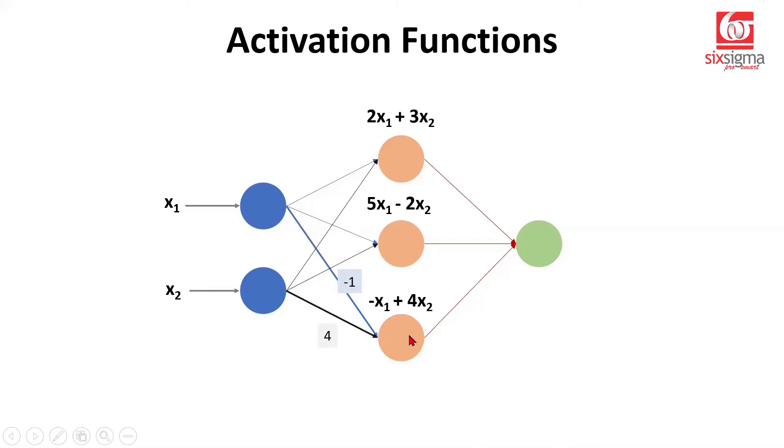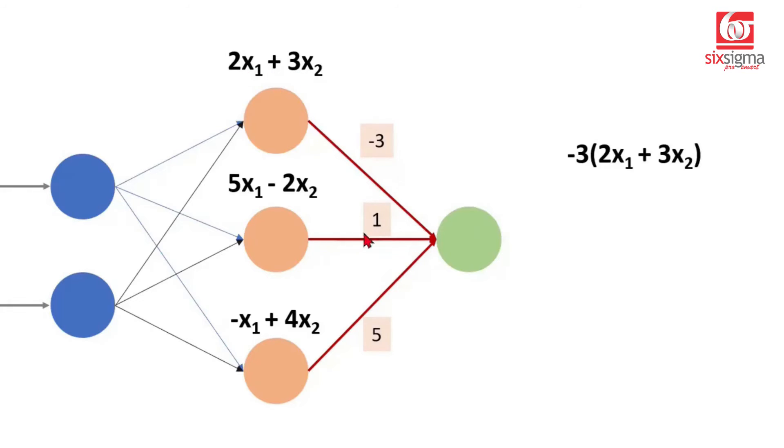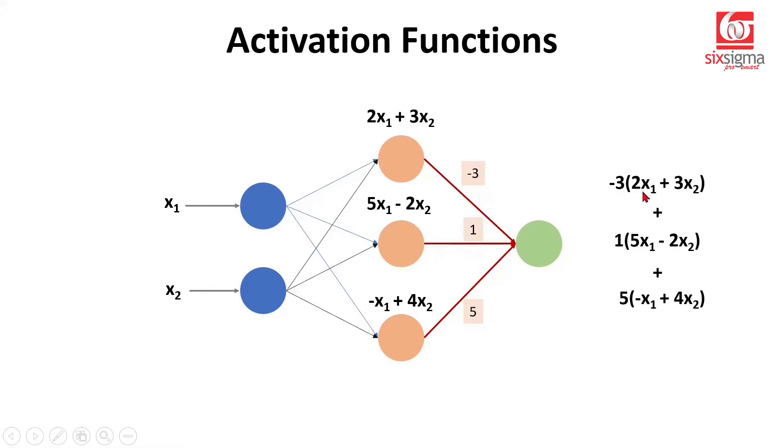Now these aggregated inputs will be passed on to the next neuron, which happens to be the output neuron in our case. And of course, we have weights associated with these connections as well. So let's bring the weights here first. Now you can imagine it will be -3 times this value plus 1 times this value plus 5 times this value. Now we simply have to add these. So this value is going to be -6x1 + 5x1 - 5x1, so -6 and -5 is -11, -11 + 5 is -6. So we'll get the coefficient of x1 as -6.